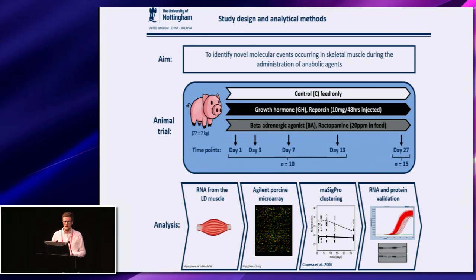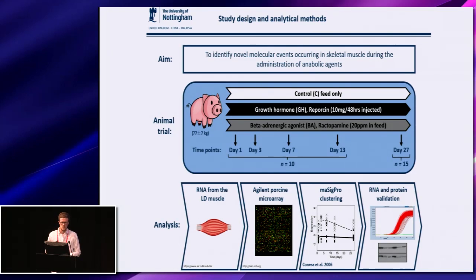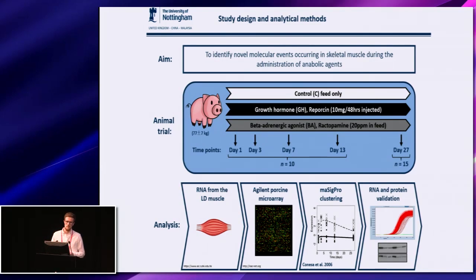This work was conducted in pigs, and we had three treatment groups: a control group, a group that received growth hormone, and a group that received the beta-adrenergic agonist ractopamine. For the purpose of this talk, I'm going to focus on the beta-adrenergic agonist and ignore the growth hormone for now. This was a time course study design with five time points. These pigs were treated for up to one month, and at each time point the pigs were slaughtered and we took tissue samples from multiple tissues. The data I'm presenting today is from the LD muscle — longissimus dorsi. We extracted RNA and used it for microarray analysis from all 165 pigs, so this was a big transcriptomics data set.